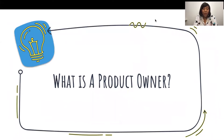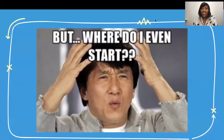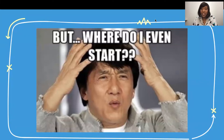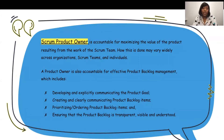Coming back to what we were talking about today — what is a product owner? For many people there are a lot of definitions, a lot of personal interpretations of the role. But from a scrum standpoint, there are key characteristics and strategies that need to be identified from the start. A definition from scrum.org defines a product owner as being accountable for maximizing the value of the product resulting from the work of a scrum team, which may vary widely across organizations, scrum teams, and individuals.